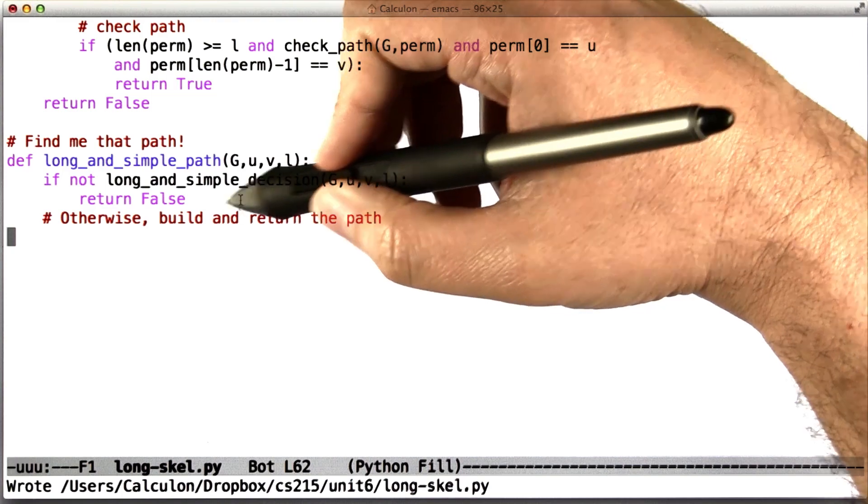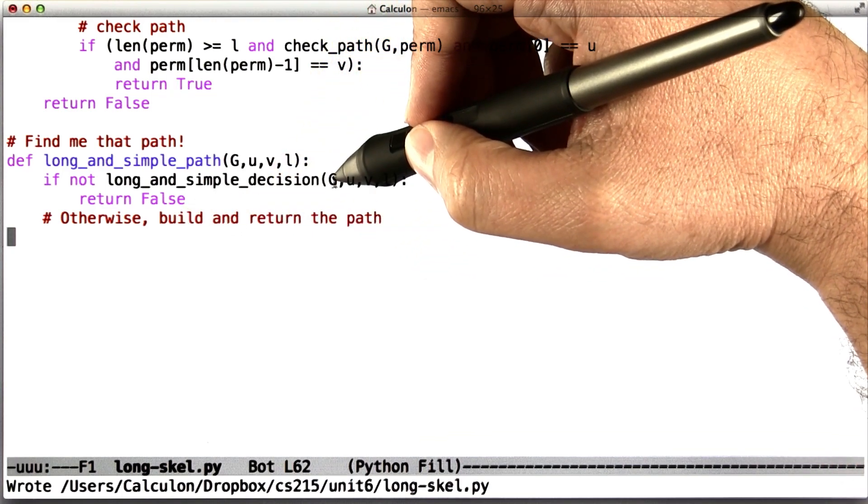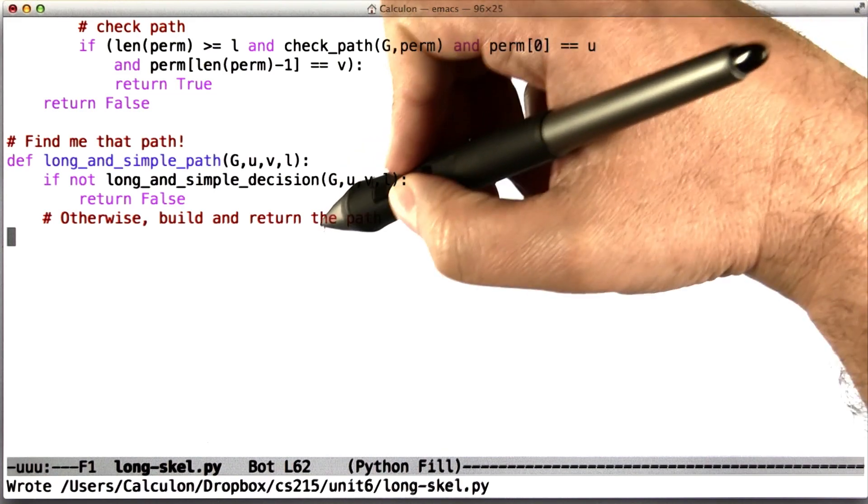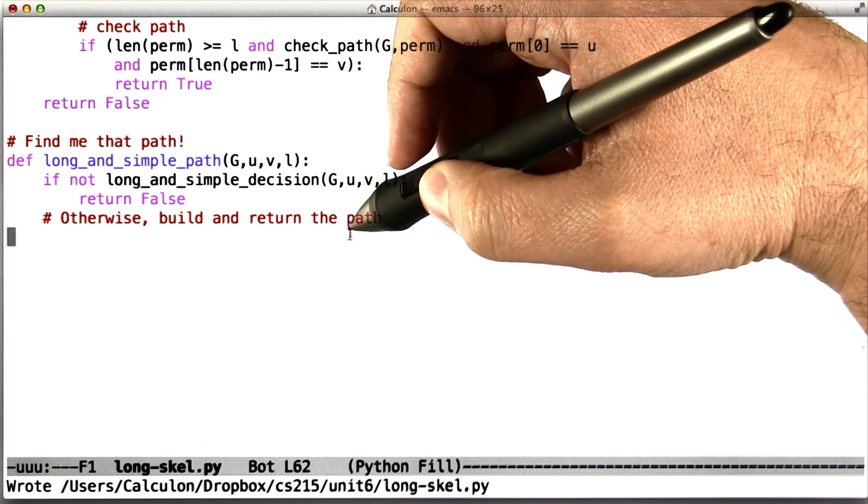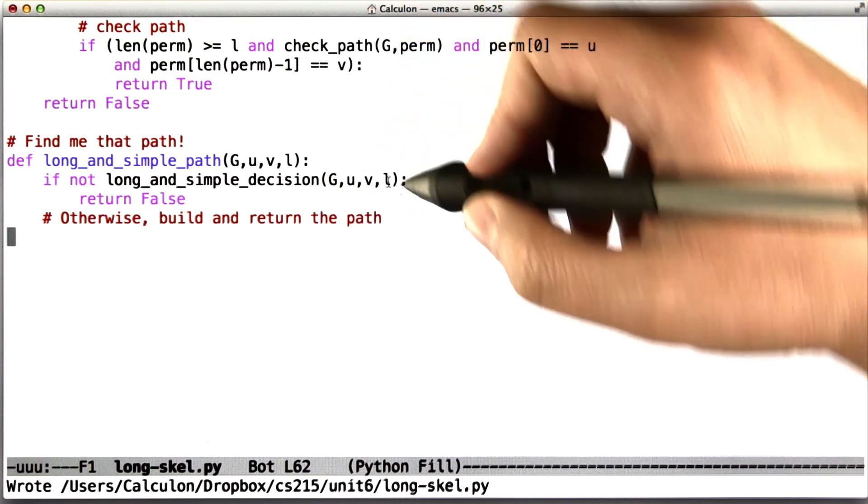But otherwise, you actually need to build and return the path as a list of nodes. And the first element of that list should be U, and the last element should be V, and all the steps in between should be actual edges, and the total number of nodes on that path needs to be at least L.